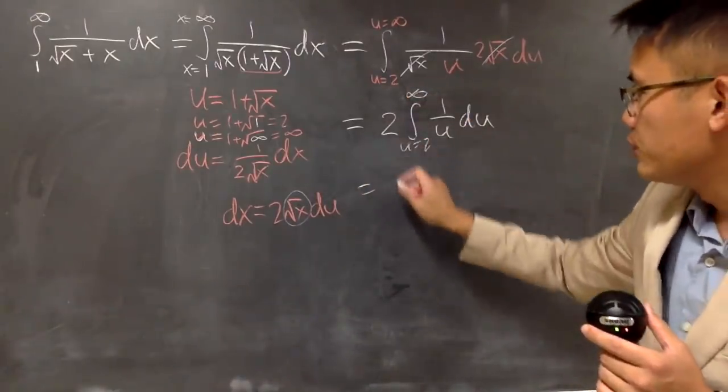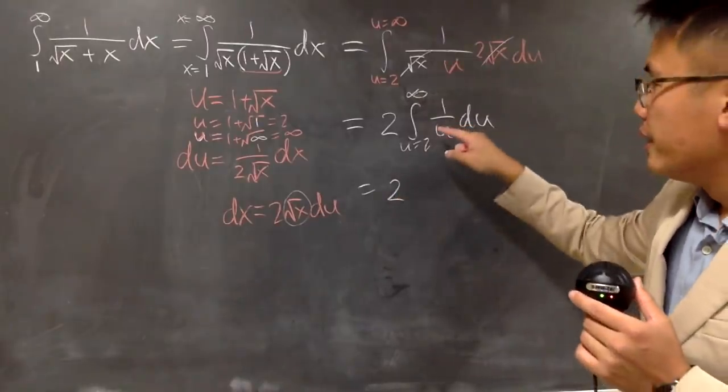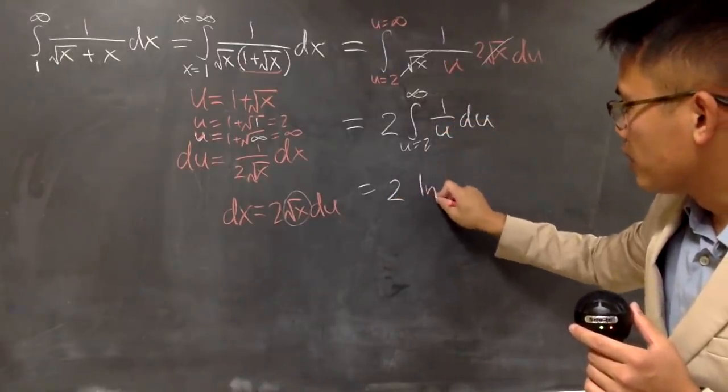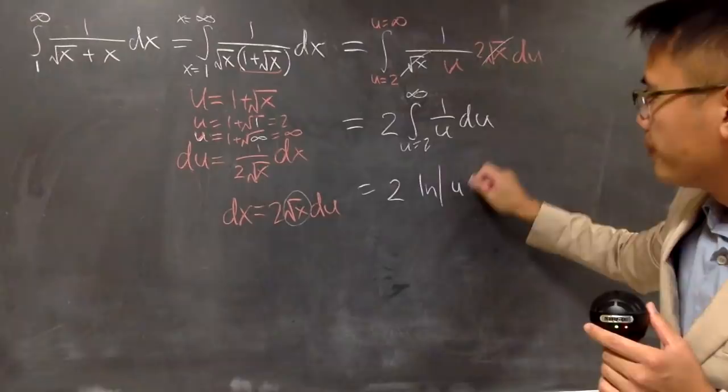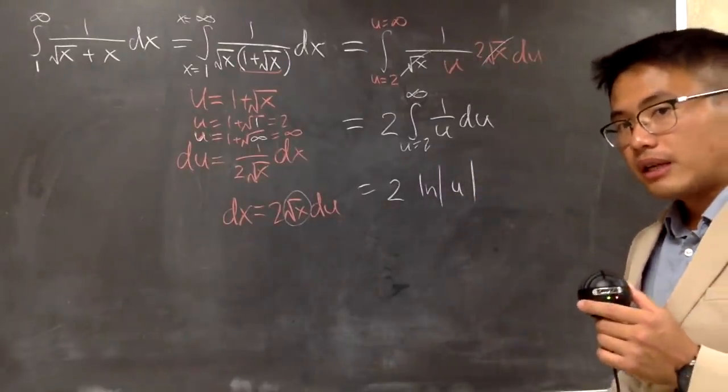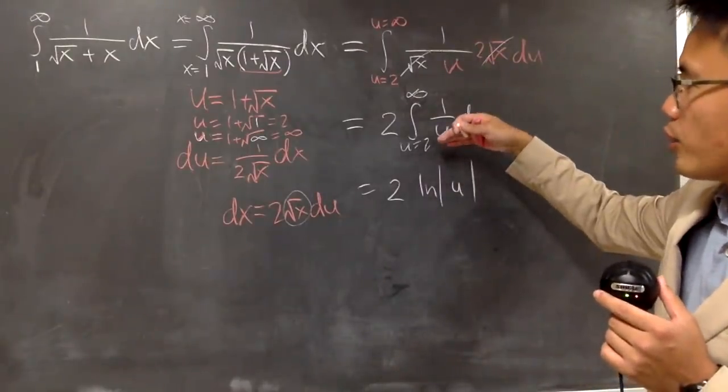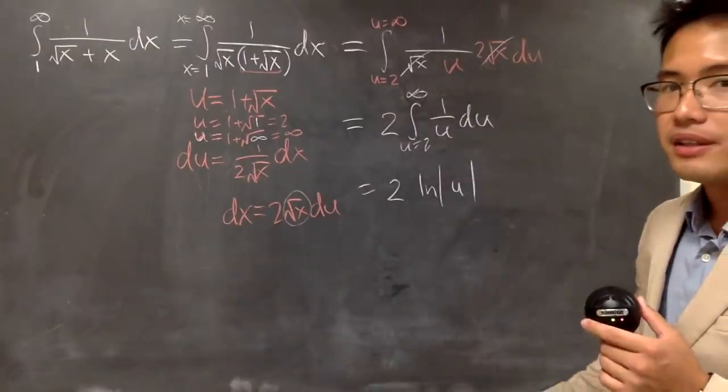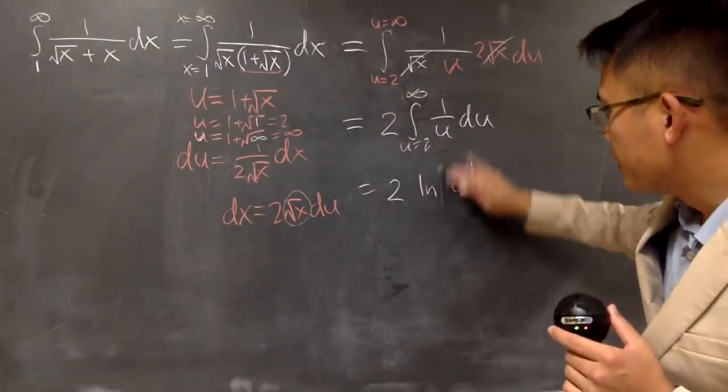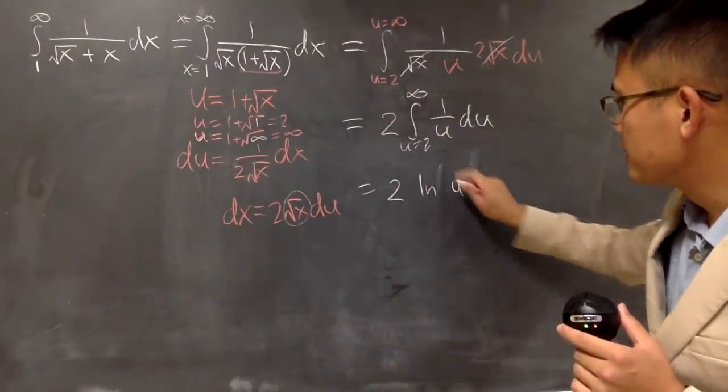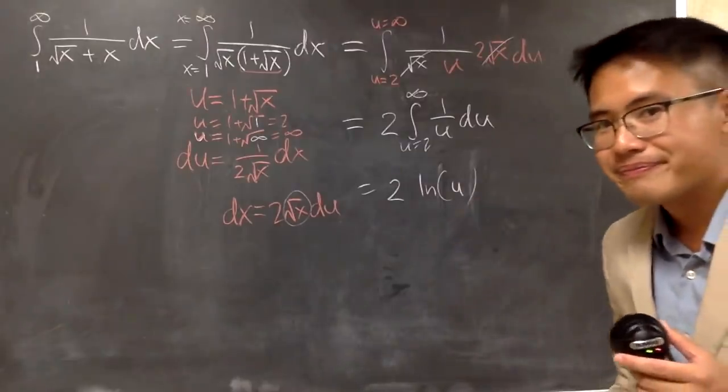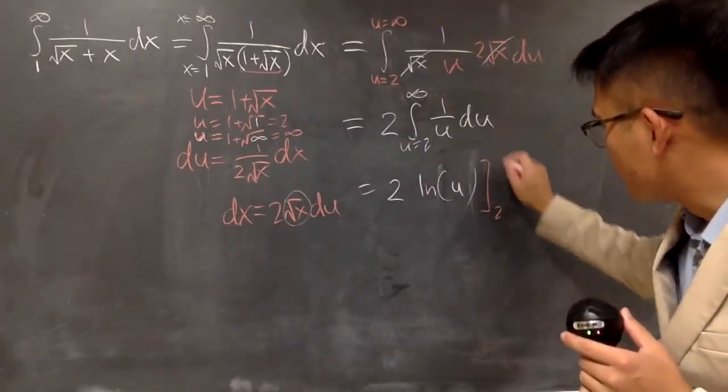And when you integrate this, we still have the 2 right here. The integral of 1 over u is natural log of absolute value of u. And in fact, you don't need the absolute value, because you are going from 2 to infinity. So, ln of u. You can keep it, or you can just change this back to parentheses. Doesn't matter. Anyway, you are going from 2 to infinity.